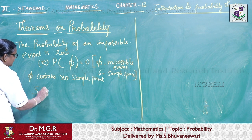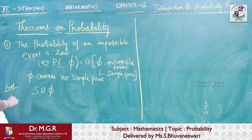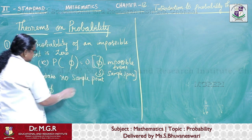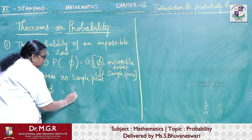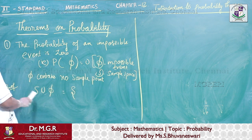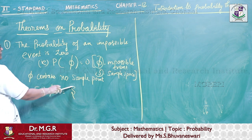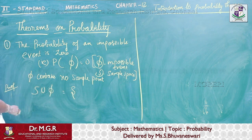So S union phi. What is S union phi? S is a total sample space, phi is nothing. So the total value will be equal to S. Union is nothing but combining these two. If I combine these two, the final value will be S.